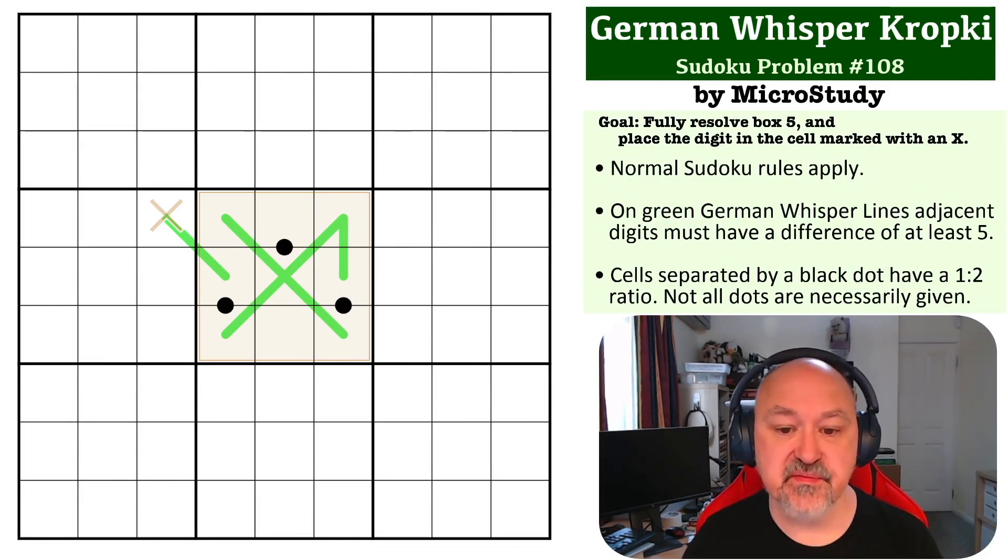The goal of this one is to fully resolve box 5 and also to place the digit in the cell marked with an X. The way the rules on this one work is on the German Whisper lines, the green lines, adjacent digits must have a difference of at least 5 and the cells separated by black dots must be in a 1 to 2 ratio.